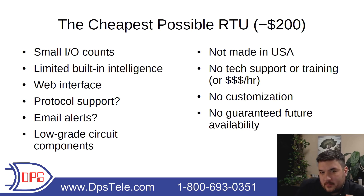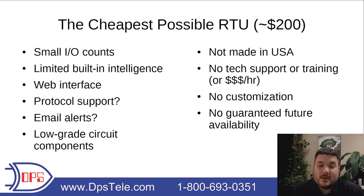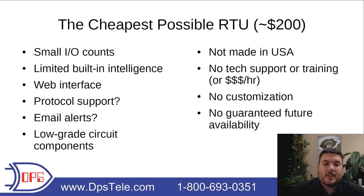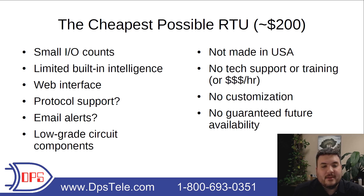Now let's look at the cheapest possible RTU — the bottom end of the range, about $200, sometimes $195 or $300. These could technically be considered RTUs and might be right for a hobbyist or a server room where you're not monitoring at all. But there are real reliability concerns and limited features. You're looking at small IO: maybe two, four, or eight discrete inputs; one or two analogs; one or two relays. Built-in intelligence is quite limited — you can see which alarms are set or clear, but probably no custom logic equations or delays to filter nuisance alarms. It does the basic job of remote monitoring, but not much else.